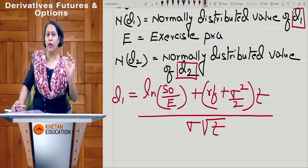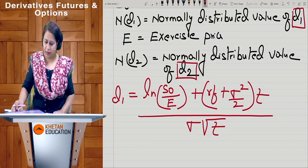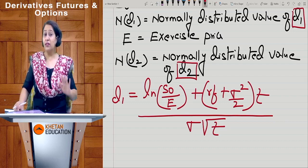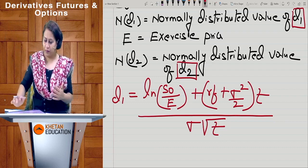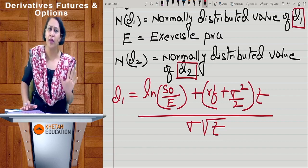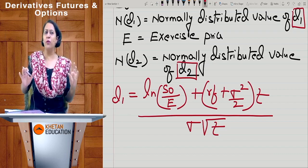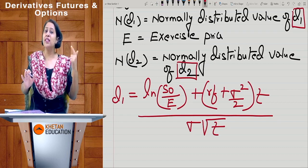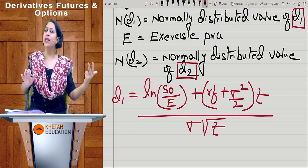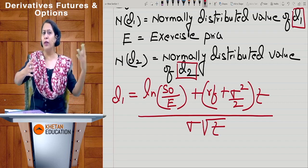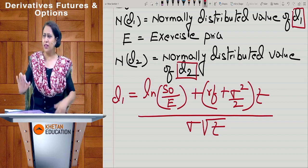The premium quoted in the market is dependent on five factors. First, the stock price. Second, the interest rate in the market, RF. Third, the volatility of the stock, sigma. Fourth, time to maturity. Fifth, exercise price. You need these five variables to solve a question of Black-Scholes model. Higher volatility means higher risk, so the call or put premium will change accordingly.